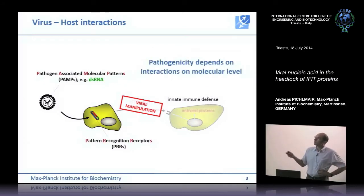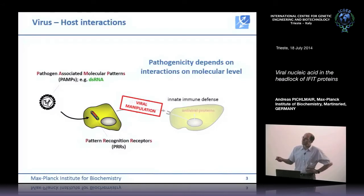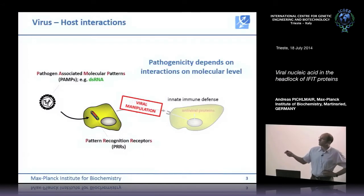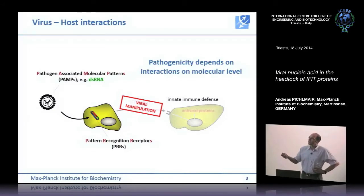This clearly shows that the manipulation of innate immunity is a very essential part of virus pathogenicity. In general, pathogenicity is dictated by molecular interactions happening either between viral RNA or viral structures and pattern recognition receptors, between antiviral proteins and viruses, or through viral open reading frames that manipulate the system.